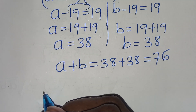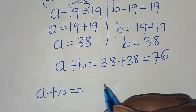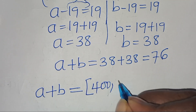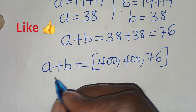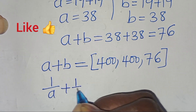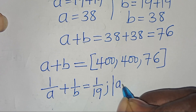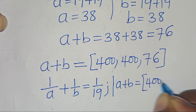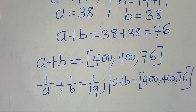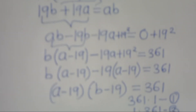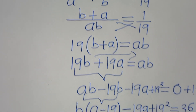So a plus b can equal 400 or 76. Those are the solutions to this algebra problem. Kindly like this video and subscribe — see you in the next video, bye bye for now.